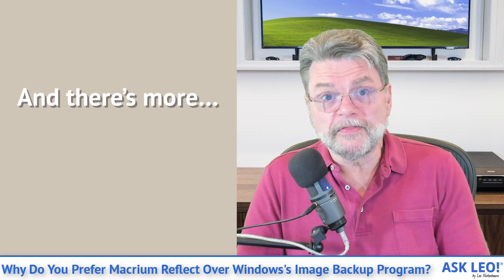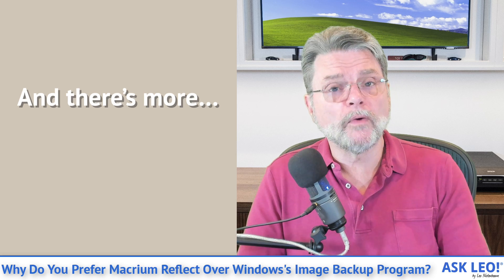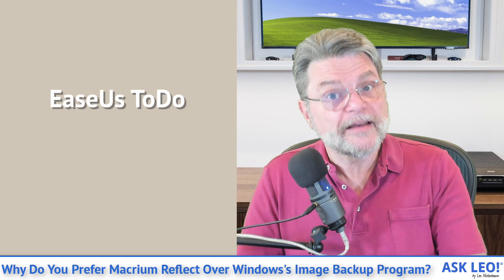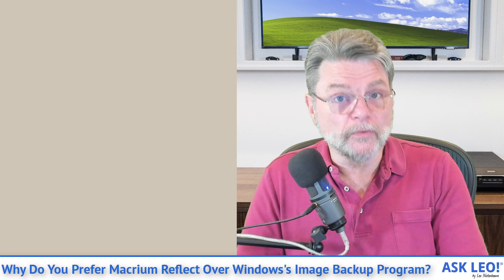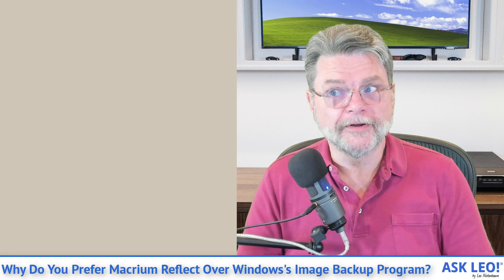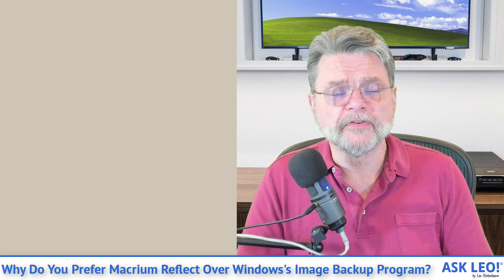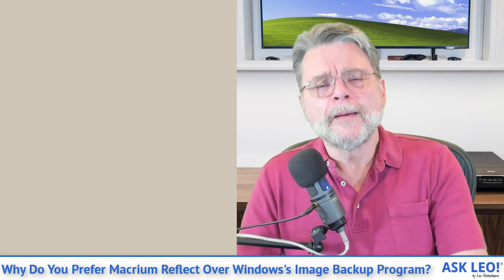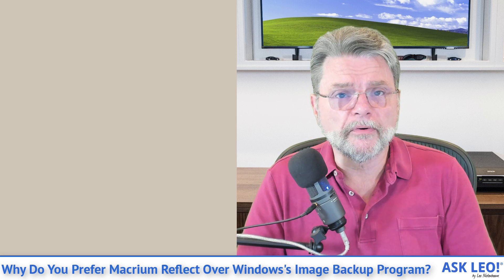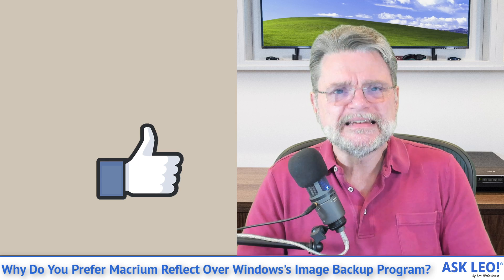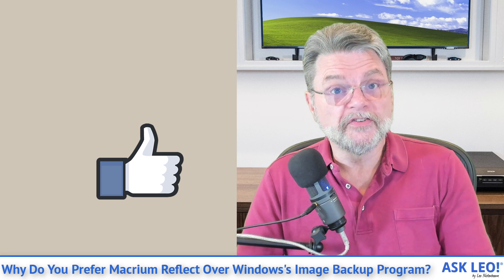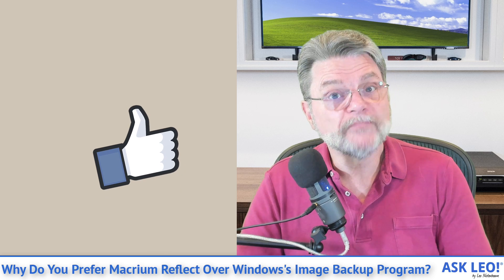Macrium is not the only solution — there are a bunch of them out there. Another one I often recommend is EaseUS Todo. The neat thing about EaseUS Todo is that they have a free version that you can absolutely use for these kinds of backups, within the limits of the features available in that free version. The bottom line is there are so many better solutions than the Windows 7 backup program — there is simply no need, no reason to continue using it, especially since Microsoft says you shouldn't.